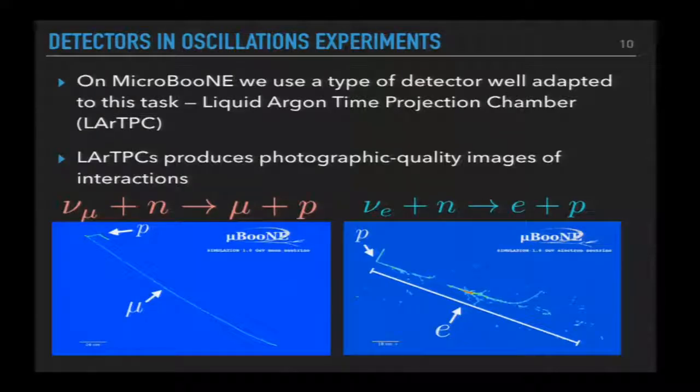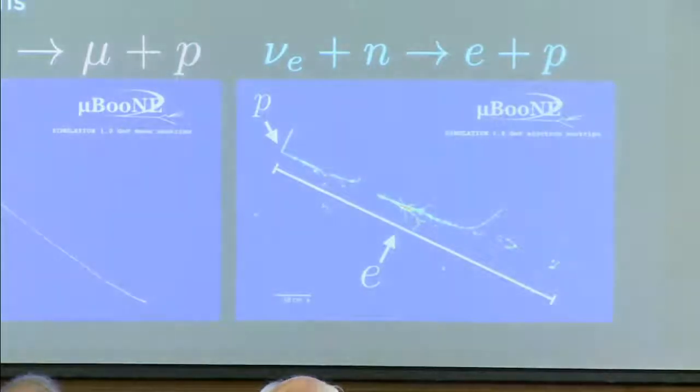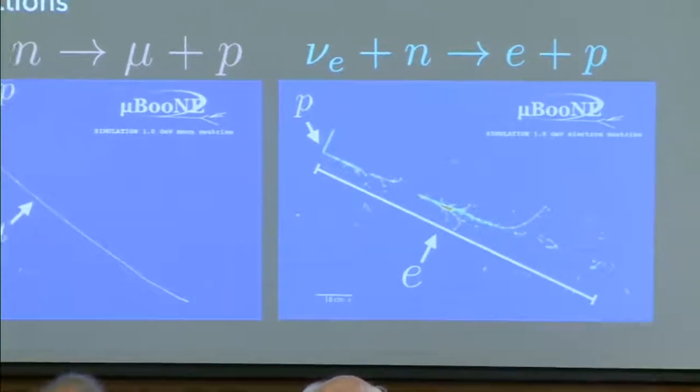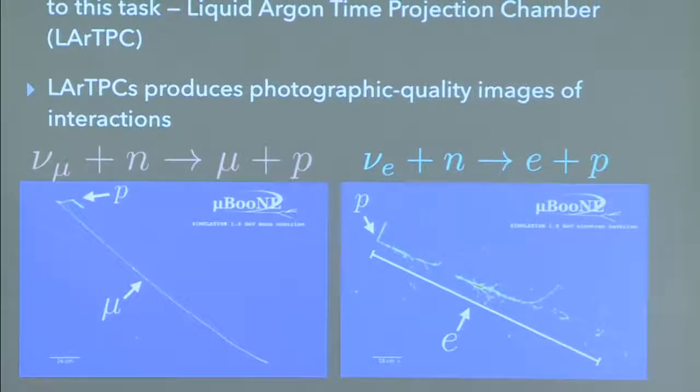And on MicroBoon, we have a detector that's very good at this. So it's a type of detector called a liquid argon time projection chamber, or LAR-TPC. And the great thing about these detectors is that it produces these very beautiful photographic quality images of the interactions that we're interested in. So here is some simulated data of these interactions. So on the left is one of the ones I showed on the previous slide, where a muon neutrino interacts and produces a muon and proton, and you can see what these muon and the protons look like in our detector. Likewise for the electron neutrino, we've produced an electron and proton, and this is what it looks like in the detector. So we can see we get this little short track for the proton in both cases, but for the muon neutrino, which produces a muon, you get this long track. And for the electron neutrino, you get these tracks with a lot of branch-like structure, which we refer to as an electromagnetic shower.